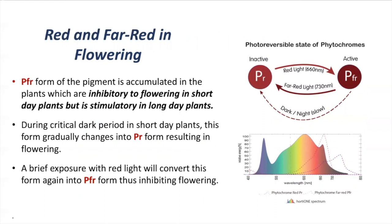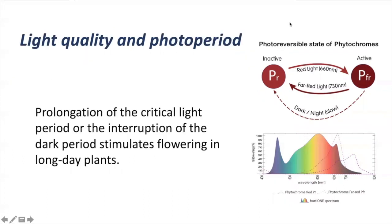Let's explain this. During the dark period, PFR converts to PR form. This is why a long period of darkness in short day plants will promote flowering. If we do a brief exposure to red light during the dark period, we will convert PR back to PFR. This is why night interruption works. In summary, night interruption can be used to avoid flowering in short day plants or promote flowering in long day plants.